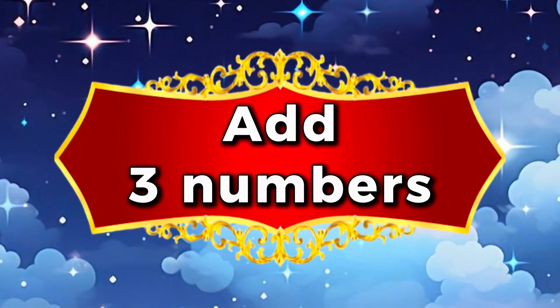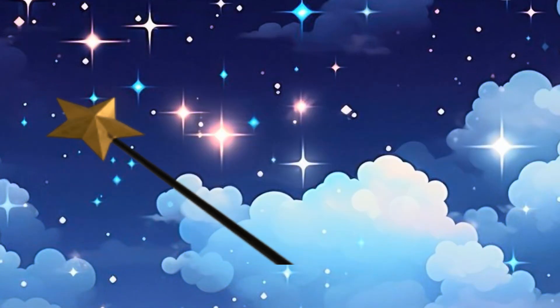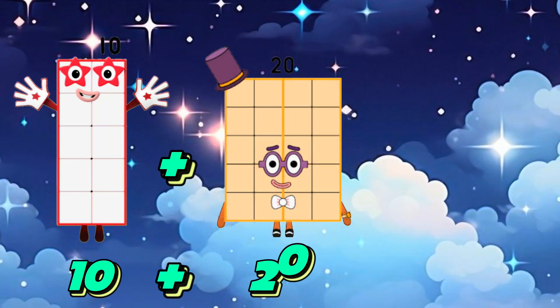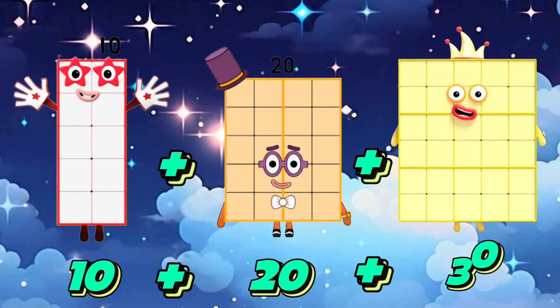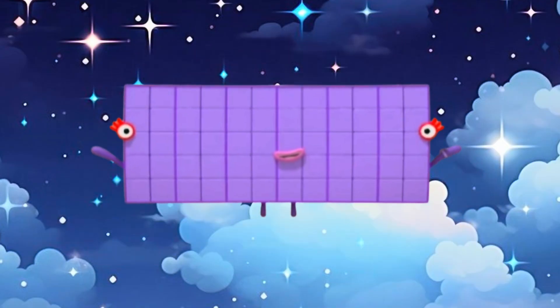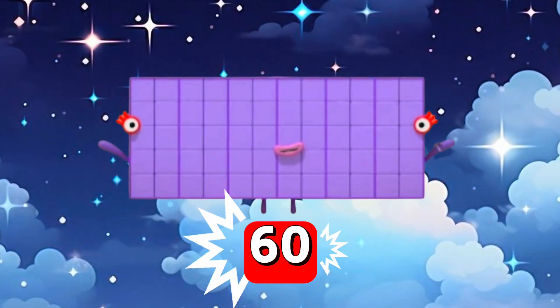Let's add 3 numbers. Let's begin. 10 plus 20 plus 30 equals 60.